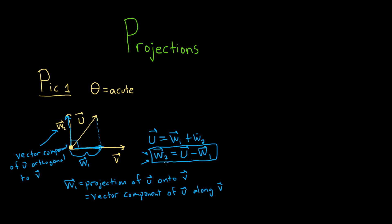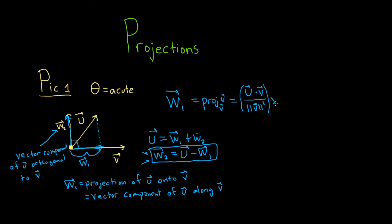In order to find w2, you first have to find w1, which is the actual projection — there's a formula for that. The notation we use is proj (p-r-o-j) of u onto v. The formula is: u dot v in the numerator, and in the denominator the magnitude of v squared. This is a scalar, and it's being multiplied by the vector v.